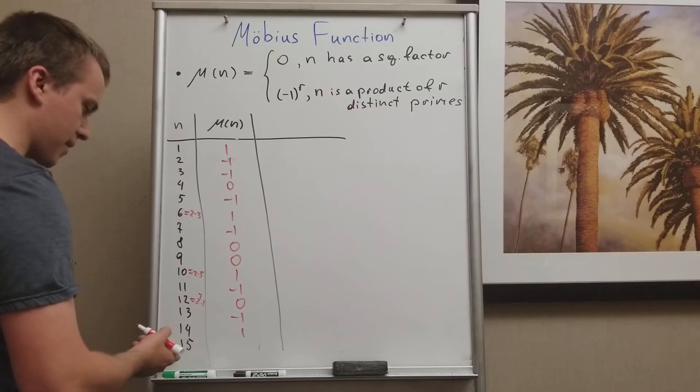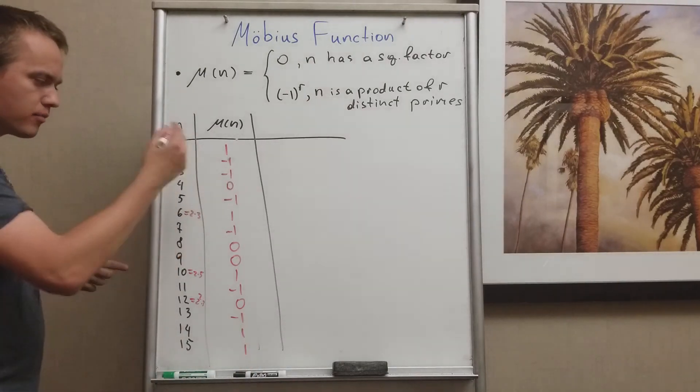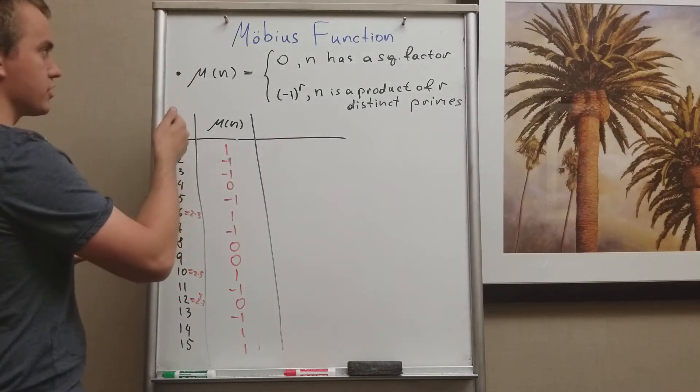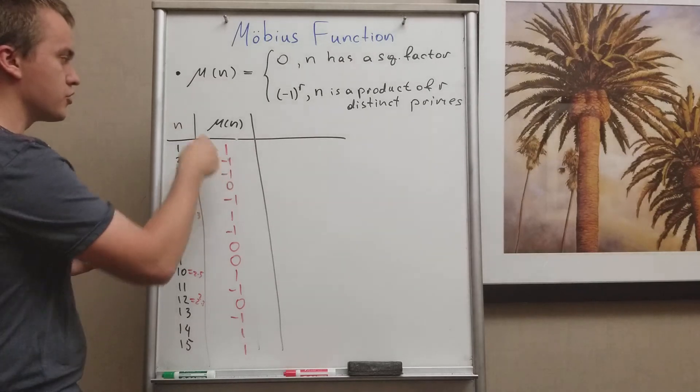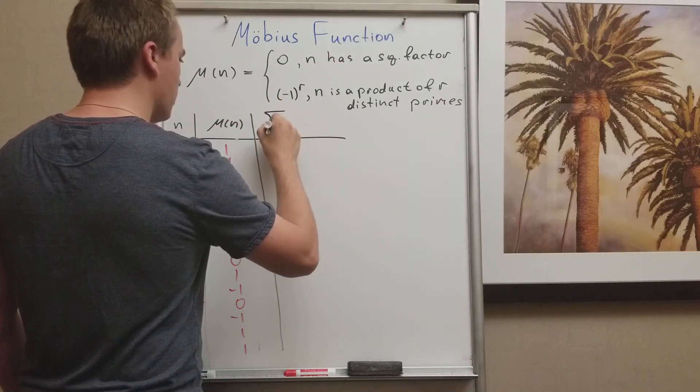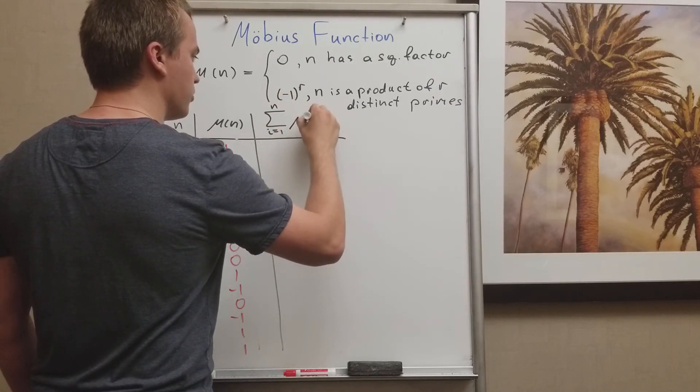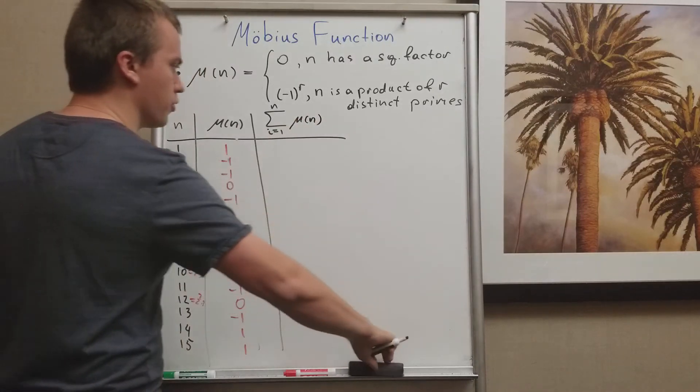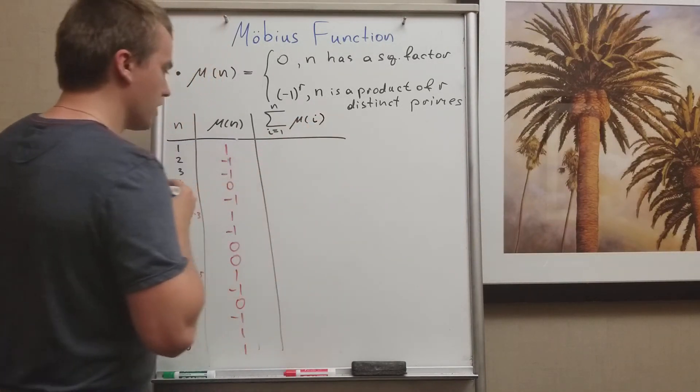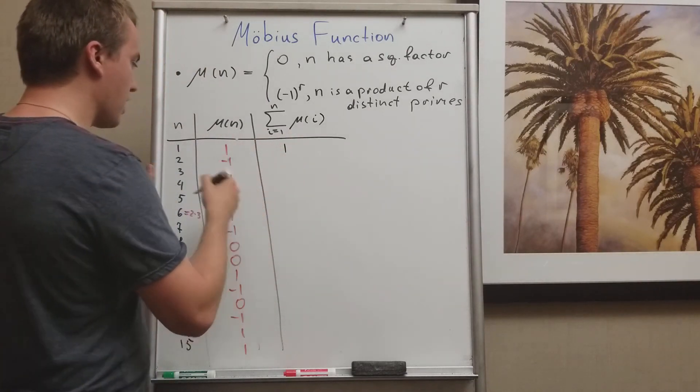And μ(15) is 3 times 5, so also 1. And you ask me why I'm doing this? It's in some sense preparation for formulation of the Riemann hypothesis in terms of the μ function. So let's find the sum when i changes from 1 to n of our μ function, μ(i). And what are we going to get?